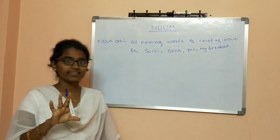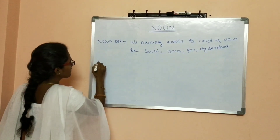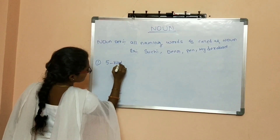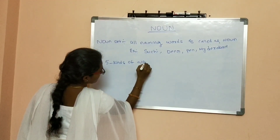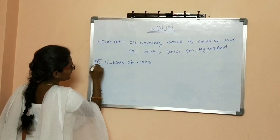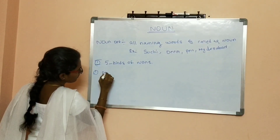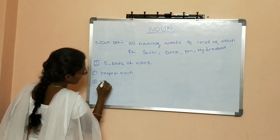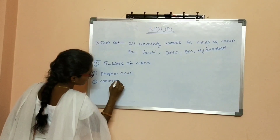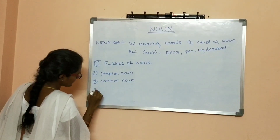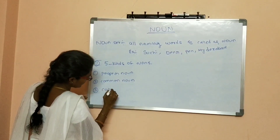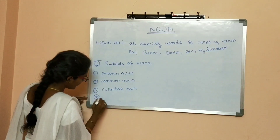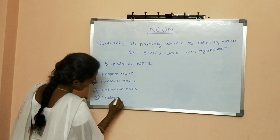In nouns, we have five kinds. The first one is Proper Noun. The second one is Common Noun. The third one is Collective Noun. The fourth one is Material Noun.